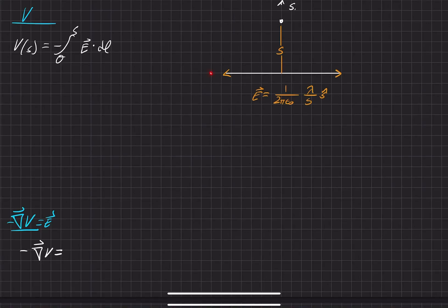In this problem, we have some infinitely long wire, and we're trying to find the electric potential at some point S, which is a distance S away from that infinitely long wire. The way we have to do that is by the definition from the textbook of the electric potential, which is the negative integral from some reference point to that point S, evaluated at the dot between the electric field and the distance vector.